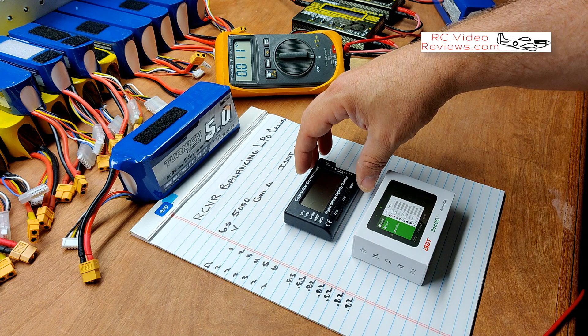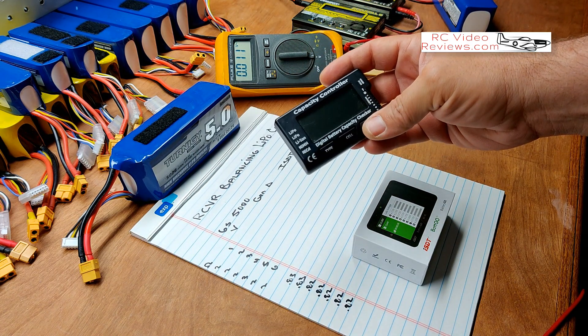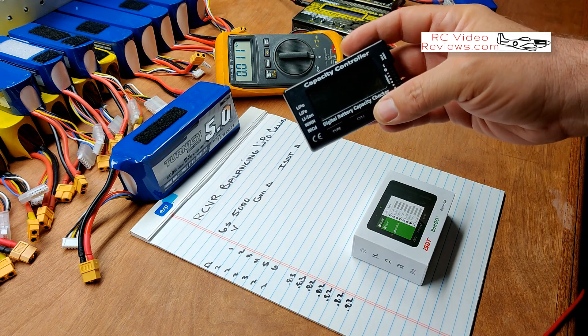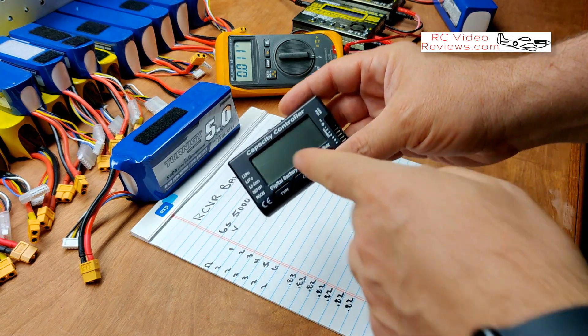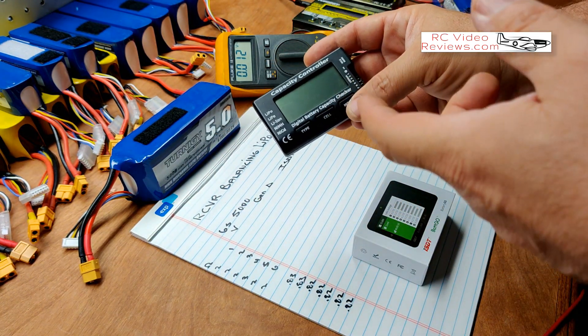Hey guys, for some time I've been questioning the accuracy of this little generic balance checker. I use it to verify the voltage on my cells and the idea is to make sure that all cells have the same starting or ending voltage on a pack. Over time on some of my batteries, I've noticed that the readings on this can be off quite a bit from one cell to the next.